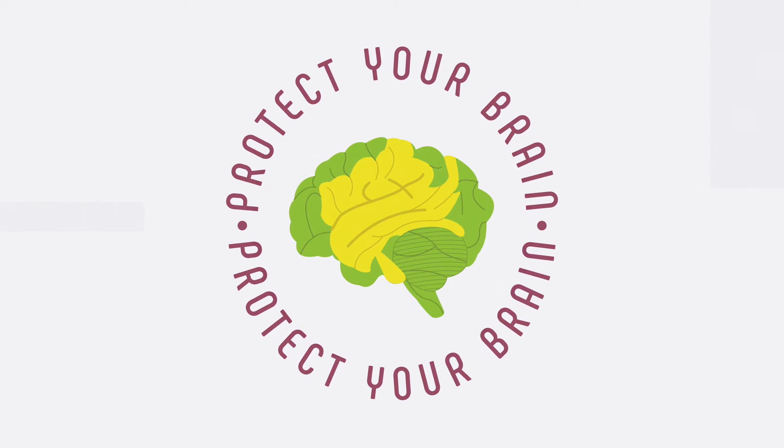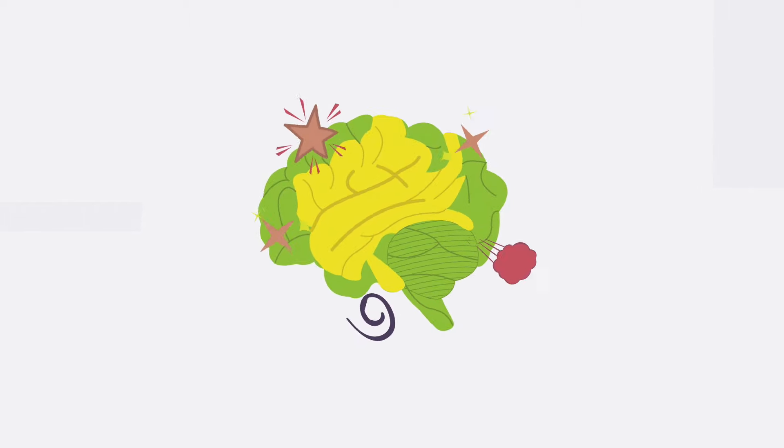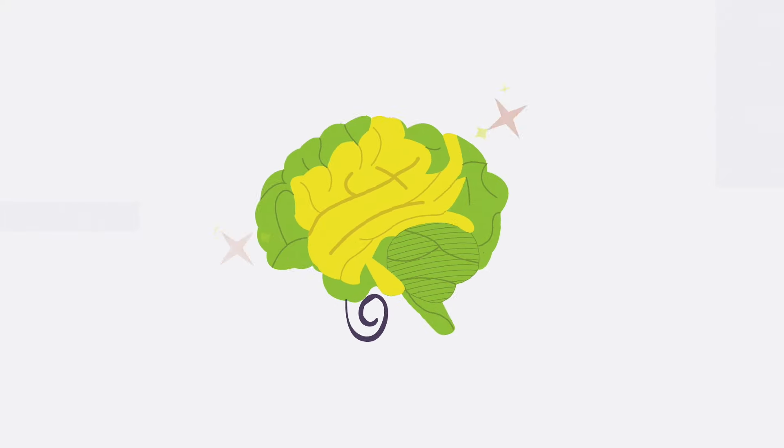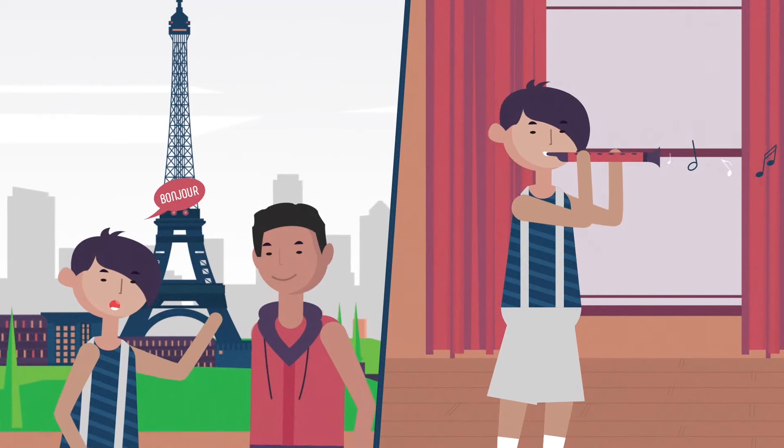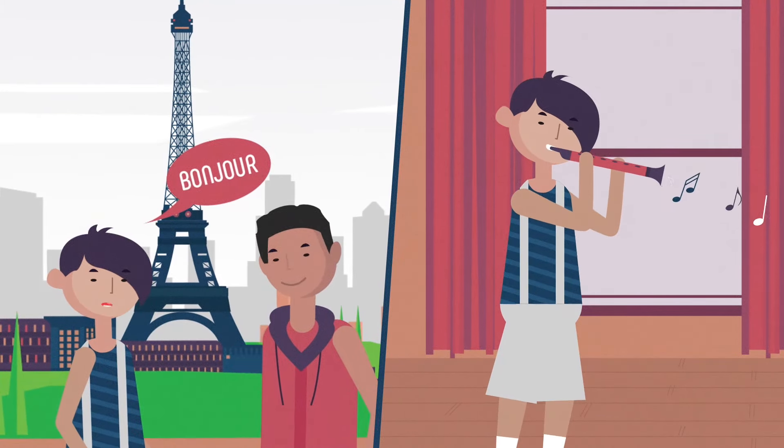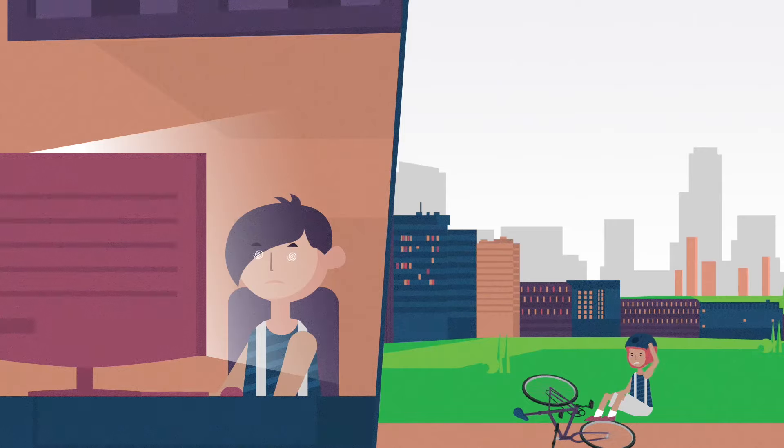The adolescent brain is rapidly developing, learning, changing all the time. It can learn a language or a musical instrument more quickly than an adult brain, but it can also be harmed more easily.